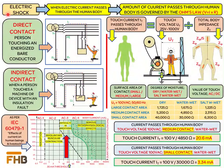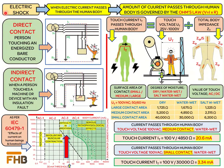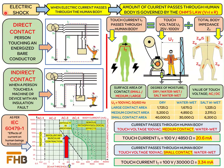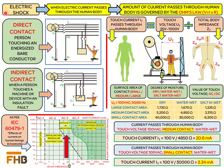An electric shock is the passage of electric current through a human body. This can happen because the human body is a good conductor of electricity due to the presence of different ions such as sodium, potassium, and calcium. The most common reasons for a person to get an electric shock are faulty electrical appliances and electrical cables or wires with damaged insulation. A person can be subjected to an electric shock in two manners: one is called direct contact and the other is called indirect contact.